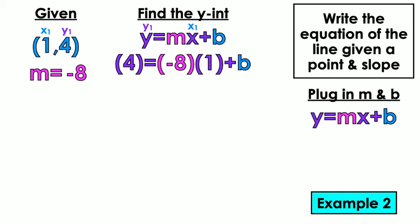I have X1, which is a 1, because in the point, they gave that to us. And then the Y on the other side of the equation is 4, because that's what they gave to us. First, you want to multiply negative 8 times 1. Negative 8.